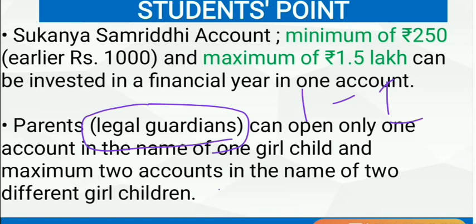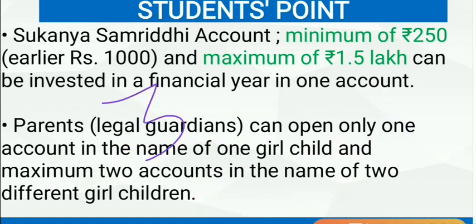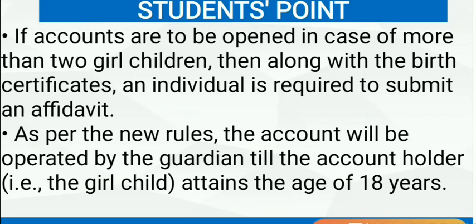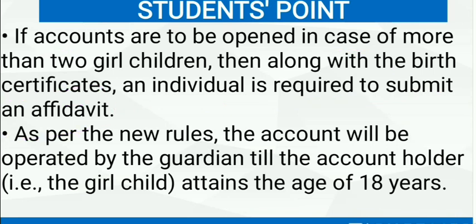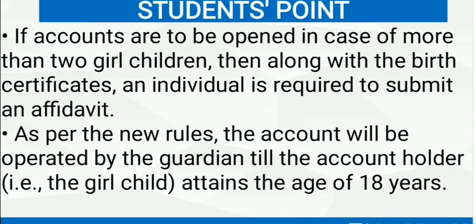Earlier, accounts could be opened only for two girl children, meaning if parents had three or four daughters, accounts would be opened for only two. But this provision has been changed recently — now parents can open accounts for more than two girl children, provided that along with the birth certificate an affidavit is submitted. The account will be operated by the guardian until the girl child attains 18 years, after which the girl becomes the account holder, and after maturity at 21 years the full amount is given to her.